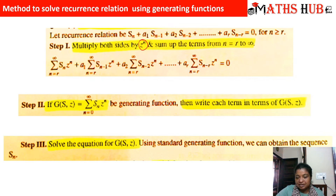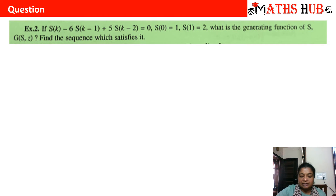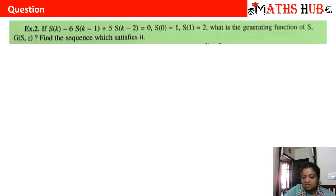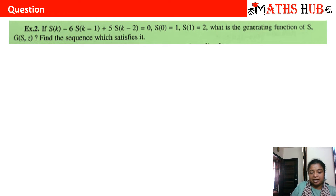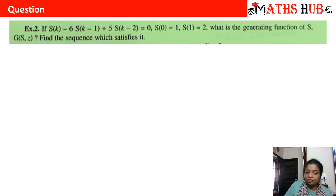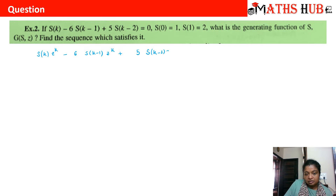Let us apply this to a question. The first example is the sequence sk − 6·sk−1 + 5·sk−2 = 0. Here the index is k, so we adjust our algorithm accordingly. The first step is to multiply the entire equation by z^k and take the summation from the lowest index. The lowest index here is k−2, so setting k−2 = 0 gives k = 2. So we multiply the entire sequence by z^k and take the summation from k = 2 to infinity; the right-hand side remains 0.